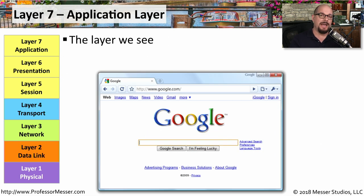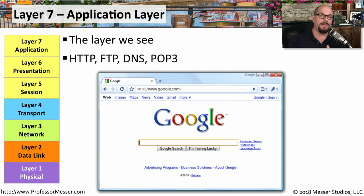And layer seven is the application layer — it's the layer that we can see, which might be a browser window. We might be transferring a file, or we might be downloading some mail.